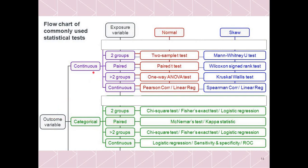When the outcome variable is continuous and the data is normally distributed, we use the two-sample t-test. When the data is not normally distributed, we use the Mann-Whitney U test. When the data is paired — that is, before and after intervention — we use the paired t-test, and the corresponding non-normal distribution test is the Wilcoxon signed-rank test.